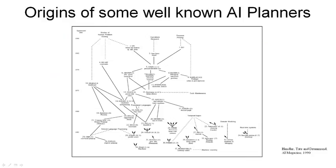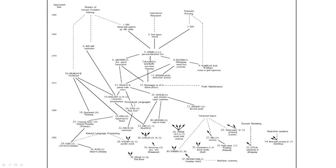There's a diagram in the 1990 review paper which tries to trace some of the historical connections between the different planners, the techniques they drew on, and how they built on one another. It's worth looking at that in detail. Perhaps you could pause the video at this point and take a good look at some of the techniques and areas in there. There's an online version of this diagram also available at high resolution if you can't see it clearly in the video.